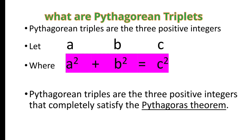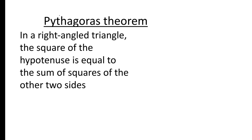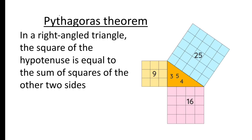So Pythagorean triplets are three positive integers that completely satisfy the Pythagoras theorem. In any right angle triangle, the square of the hypotenuse is equal to the sum of squares of the other two sides. Here, the sides of this right angle triangle are 3, 4, and 5 units. Sides 3 and 4 are the legs and 5 is the hypotenuse, so 3² + 4² must equal 5².